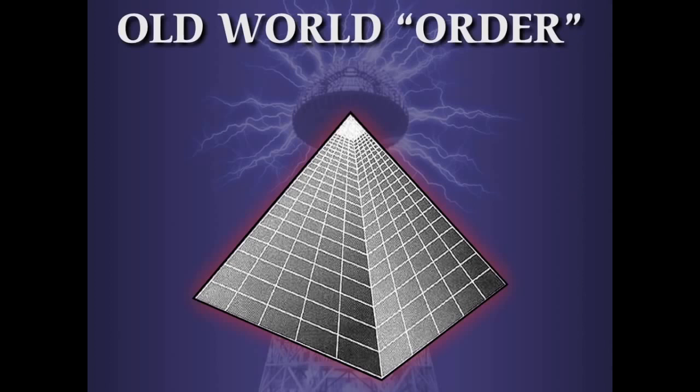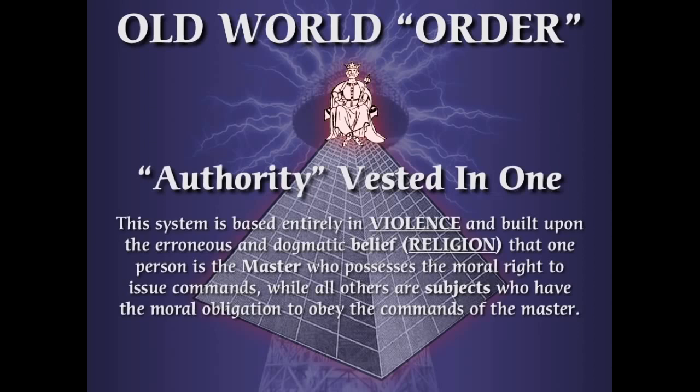Authority in the old world worked like this — it was called the old world order. There was a king at the top: unquestioned, unchallenged rule. His word was law. He was the representative of God on the earth. No one could challenge his authority. This is called authority vested in one. The system is based entirely in violence, built upon the dogmatic belief that one person is the master who possesses the moral right to issue commands, while all others are subjects who have the moral obligation to obey the commands of the master.